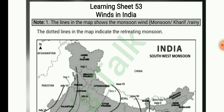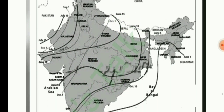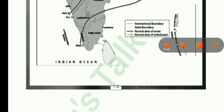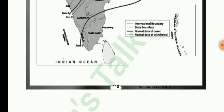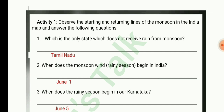Learning Sheet 53: Winds in India. The lines in the map show the monsoon wind, and the dotted lines indicate the retreating monsoon. The climate of India varies from one region to another and from season to season. In the retreating monsoon season, in early October, due to the decrease of temperature, the low pressure area is gradually replaced by high pressure over the land mass. During this season, we see unsettled weather conditions, and India receives only 13% of its annual rainfall.